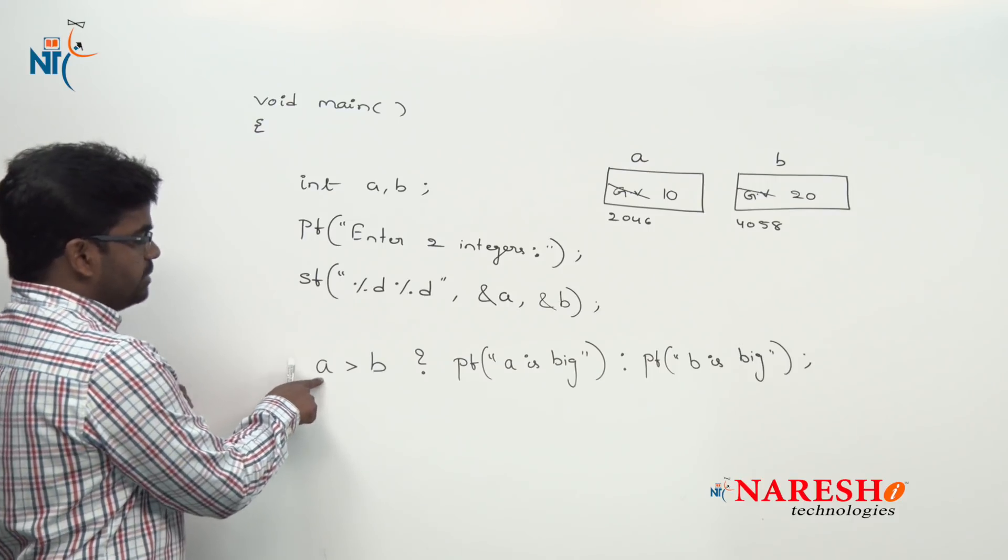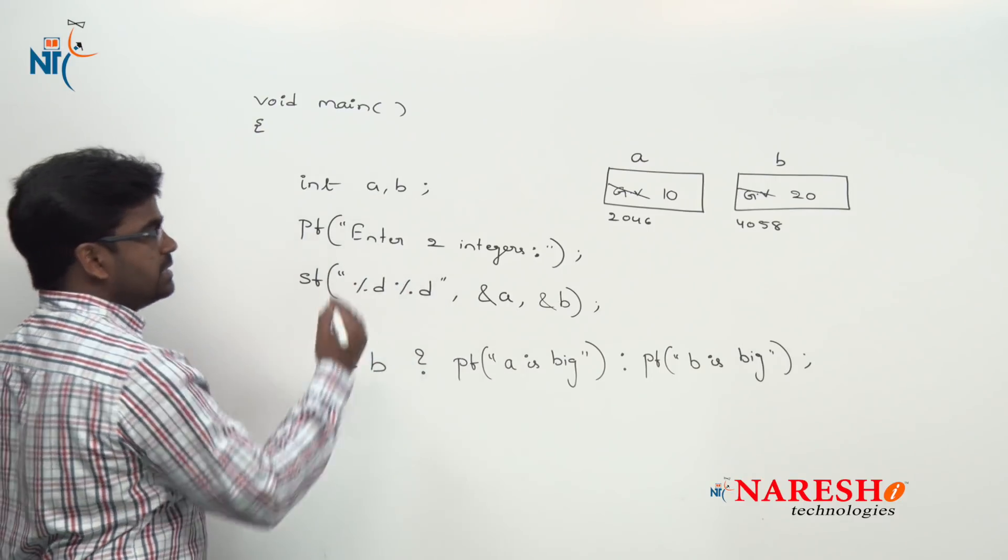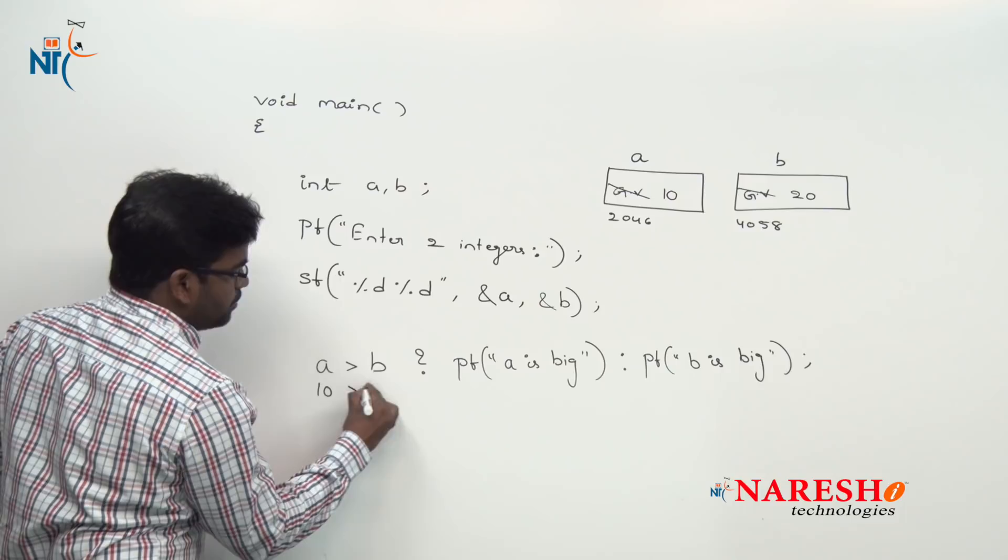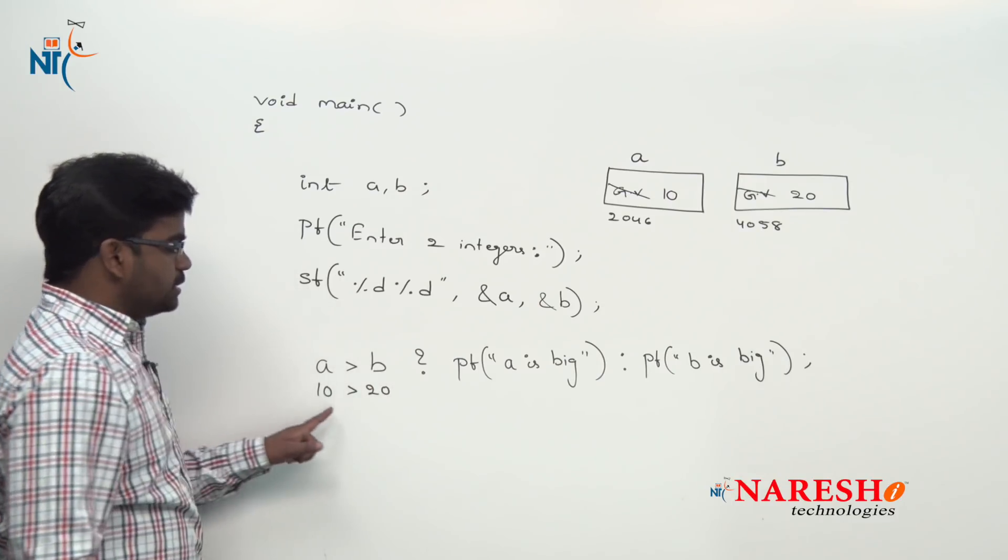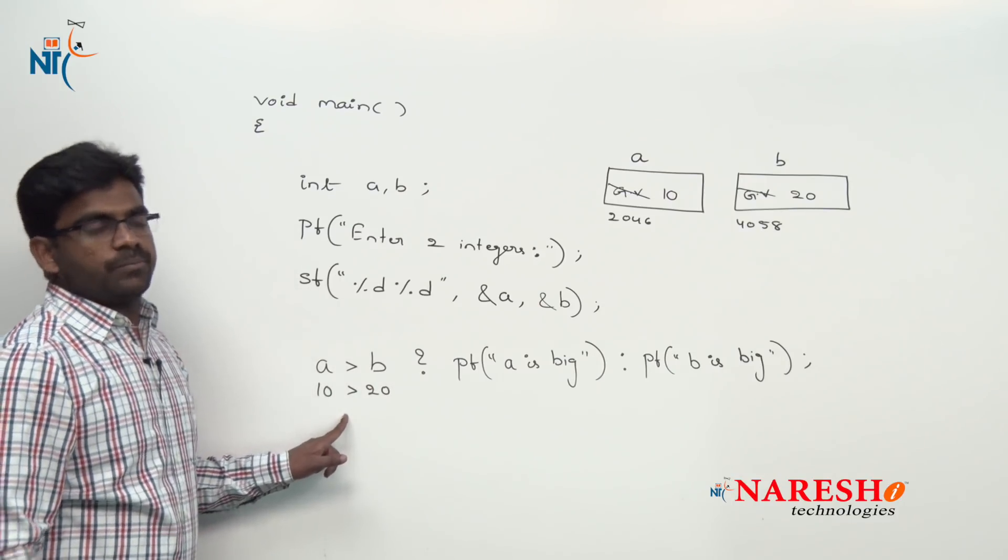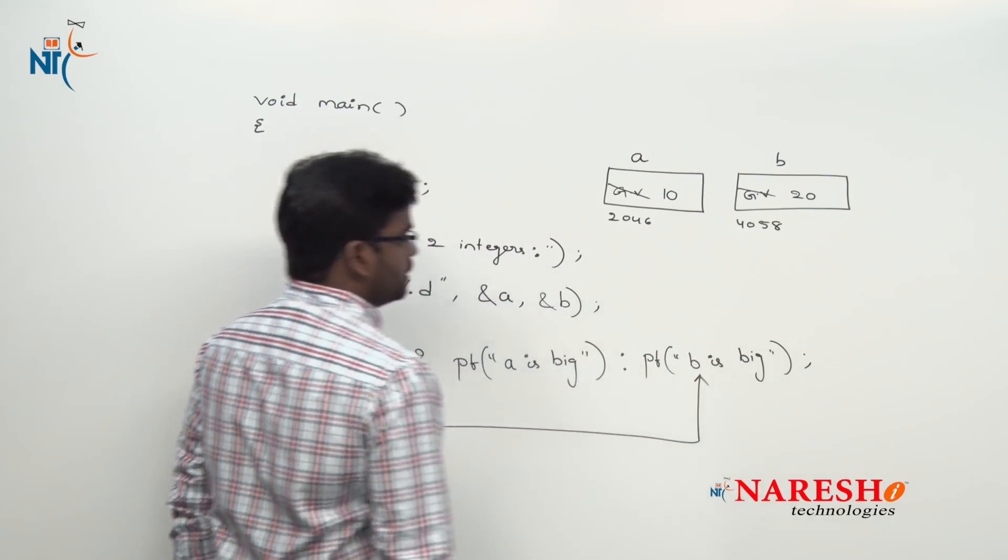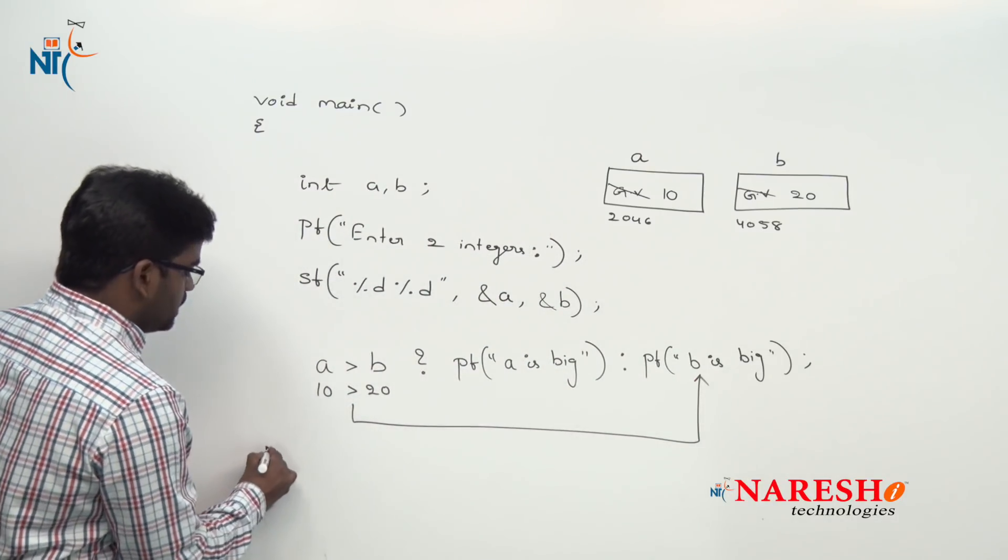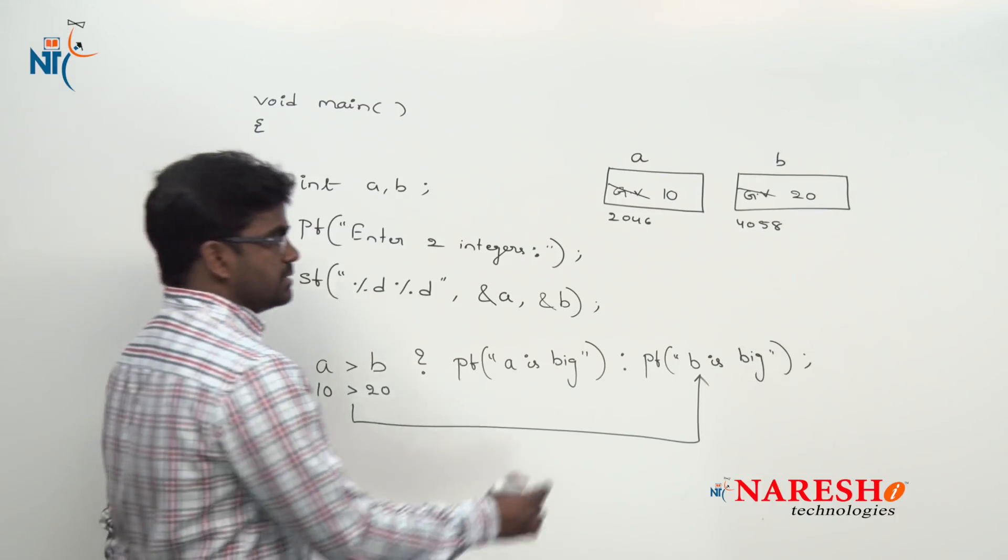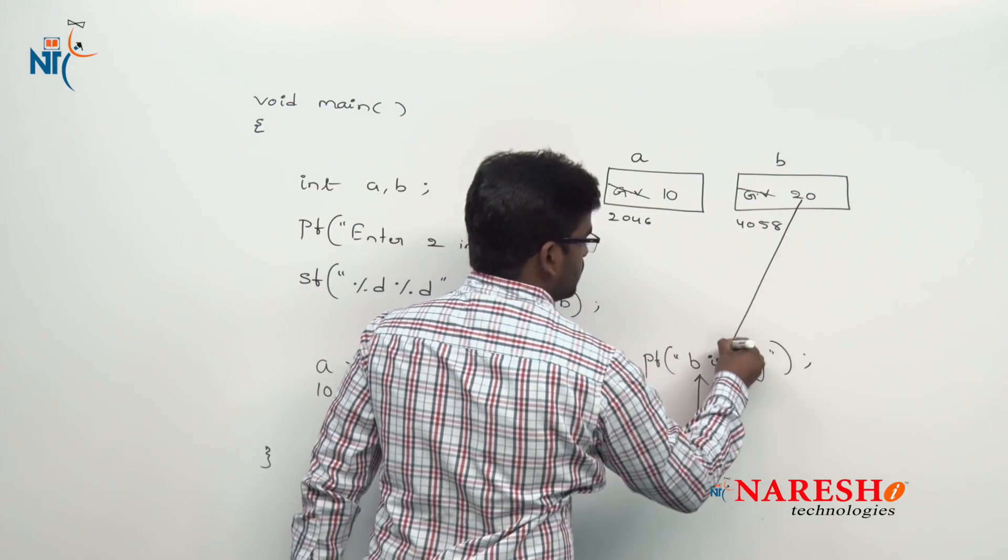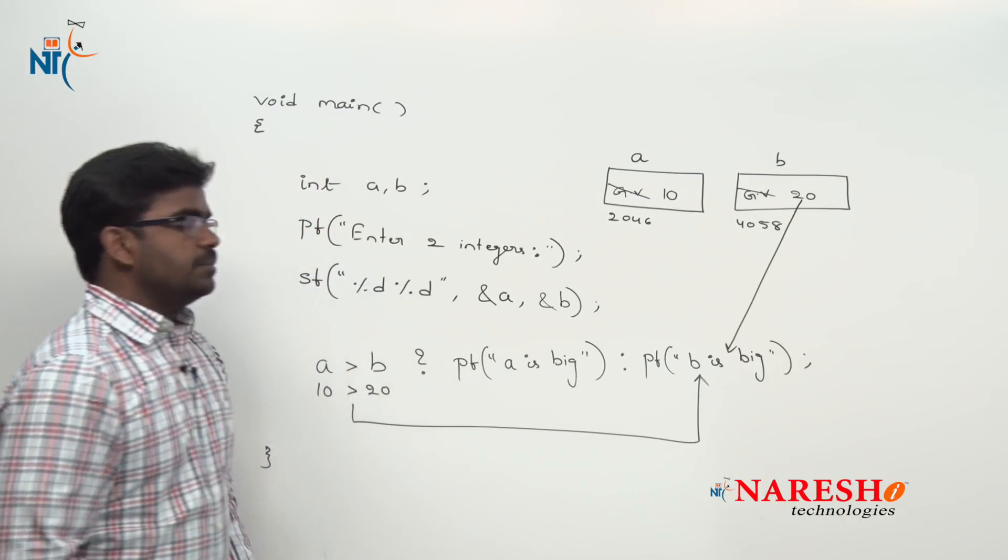Now how it will execute? First values will be substituted: a value and b value. What is it? A value is 10, b value is 20. Is condition true or false? It's false. So second expression gets executed and it will print the message b is big. Yes, b is big. So output is b is big.